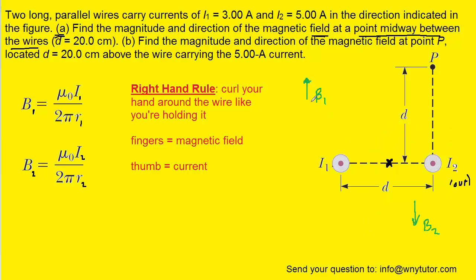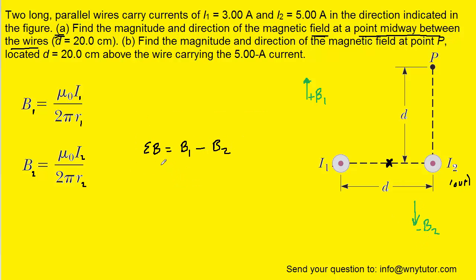Since they point in opposite directions, we assign them opposite signs. We can arbitrarily call the upward direction positive, so B₁ will be positive. We'll call the downward direction negative, making B₂ negative. That means the total magnetic field will be B₁ minus B₂.